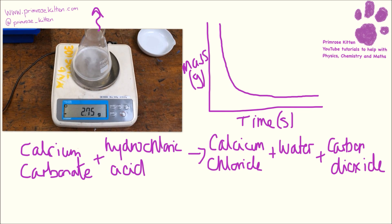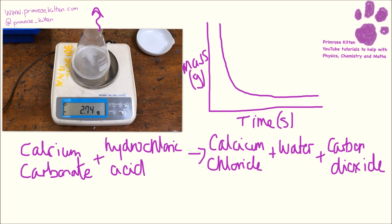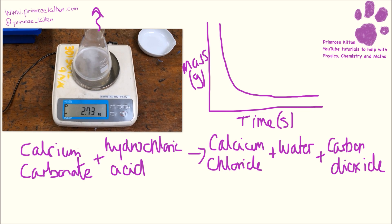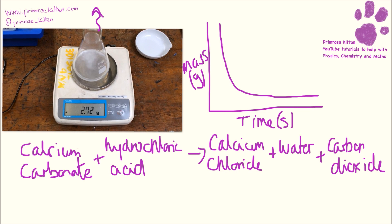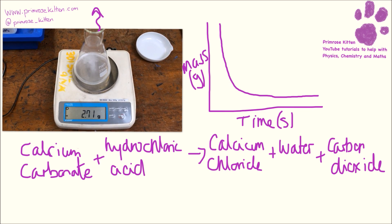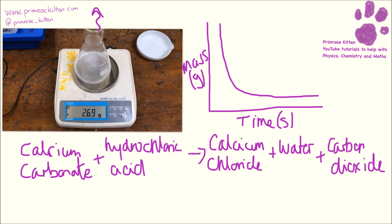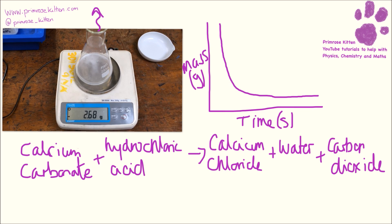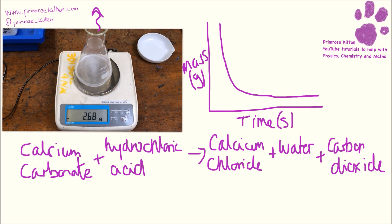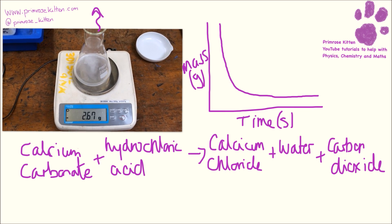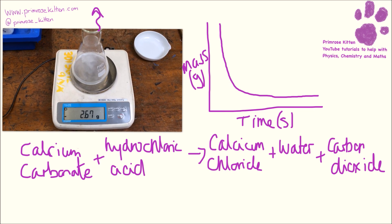If they ask you about this in the exam, they could ask what you might observe — so you could see bubbles, or if an indicator has been put in, you might see a colour change. They might also ask about the resolution of the balance, which is how accurate it is. We want it to go to two decimal places for a good resolution. If you just had it to one decimal place or whole numbers, you wouldn't see a lot of change and wouldn't really see the reaction taking place.